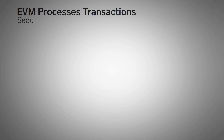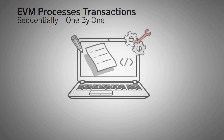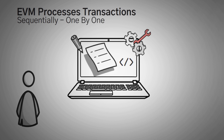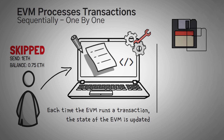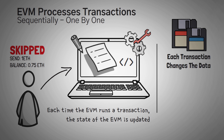The EVM processes transactions sequentially, one by one. This means it doesn't do a whole bunch of things all at once, and if a process doesn't work — for example, say you're trying to send someone one ETH but you only have three quarters of an ETH in your account — then the transaction is skipped. Each time the EVM runs a transaction, we say that the state of the EVM is updated. Since the EVM is really just a collection of data, each transaction simply changes that data. We call this collection of data a state. If just one number changes, then we say that the state of the EVM has changed.